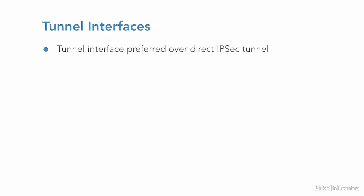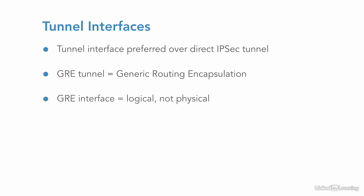IPsec VPNs can be created directly or via tunnel interfaces. Whenever possible, provided the hardware supports it, I always prefer a tunnel interface as it generally makes things simpler. A tunnel interface, like a Generic Routing Encapsulation or GRE, is usually my go-to. A GRE tunnel creates a logical interface that routing policies can easily be applied to.